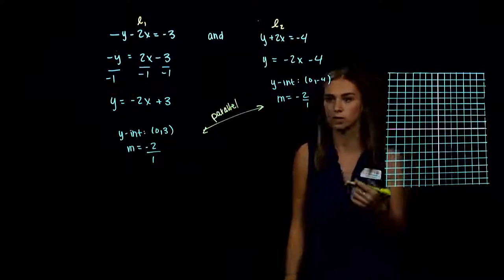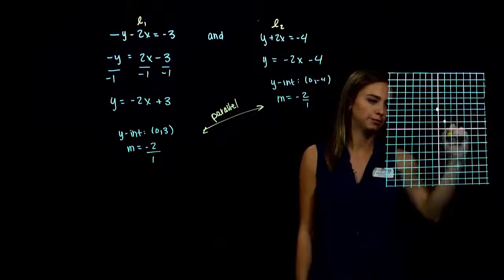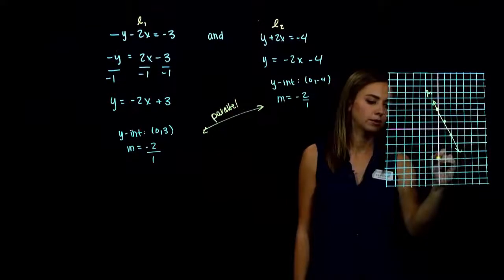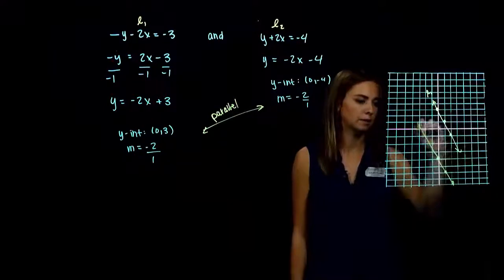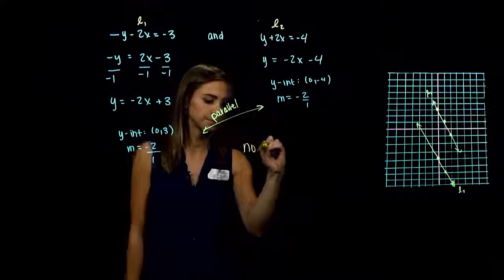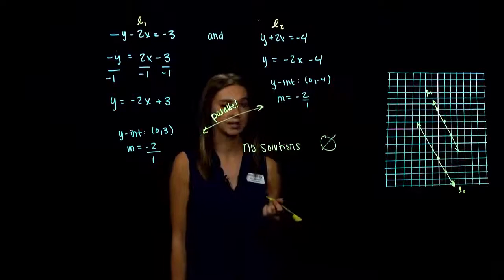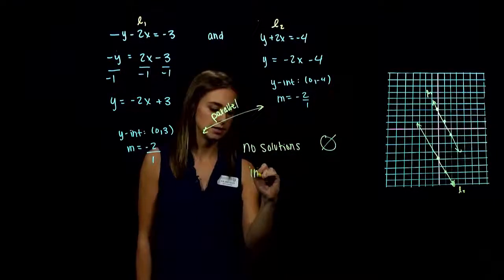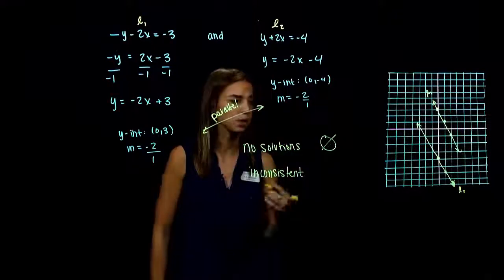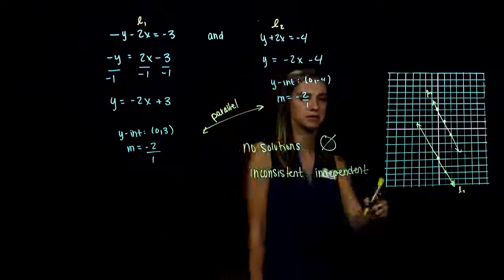Same slope, different y-intercepts — these lines are parallel. Graphing confirms it: line 1 through (0, 3) moving down 2 over 1; line 2 through (0, negative 4) moving down 2 over 1. They never touch. No solutions — empty set notation. Classification: inconsistent and independent.